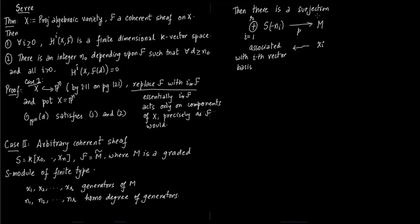M corresponds to F and this direct sum of S(-ni) we write as L. Now S(-ni) would transform to OP^n(-ni).